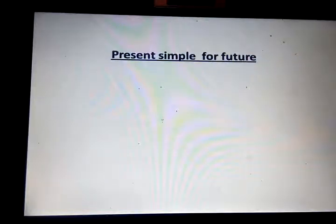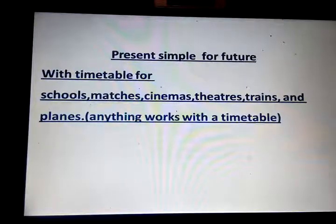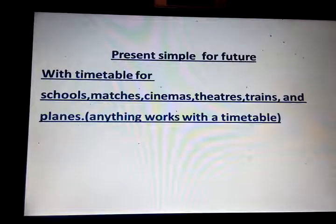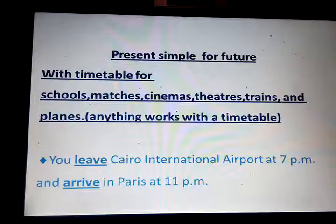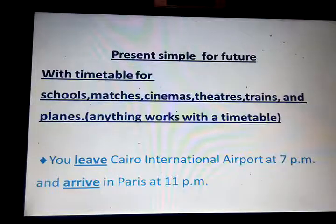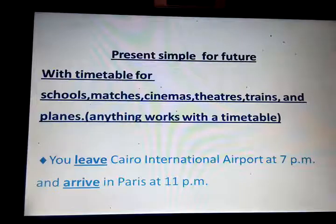Present simple for future: with a timetable — schools, matches, cinemas, theatres, trains, planes — anything that works with a timetable. We use the present simple to express future events on a schedule. Example: You leave Cairo International Airport at 7 pm and arrive in Paris at 11 pm.